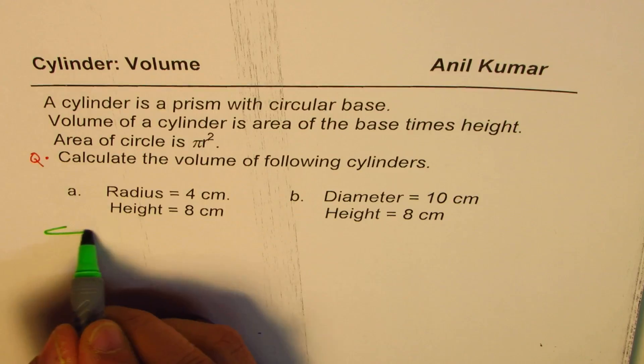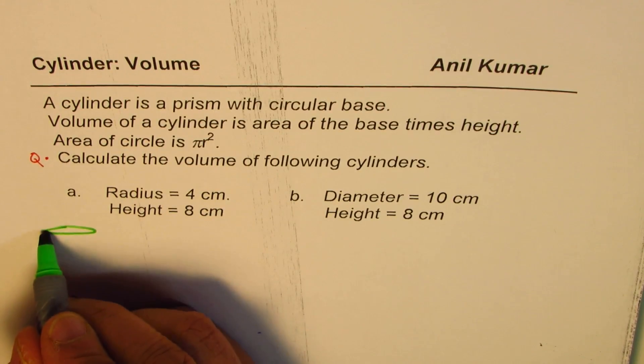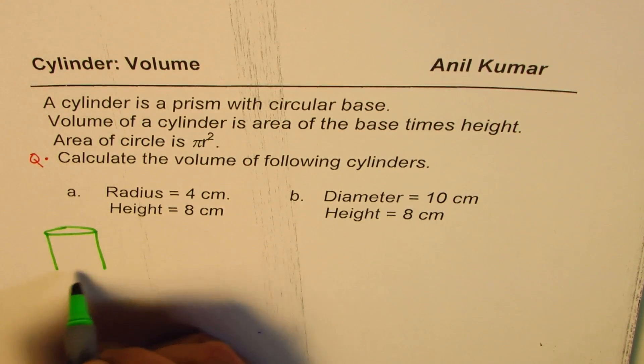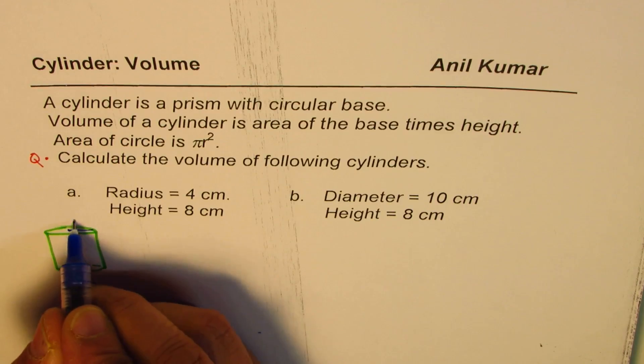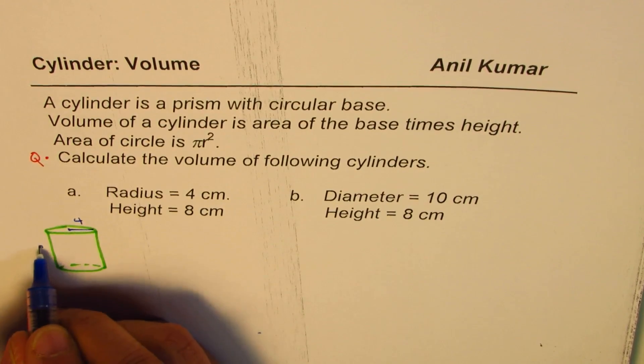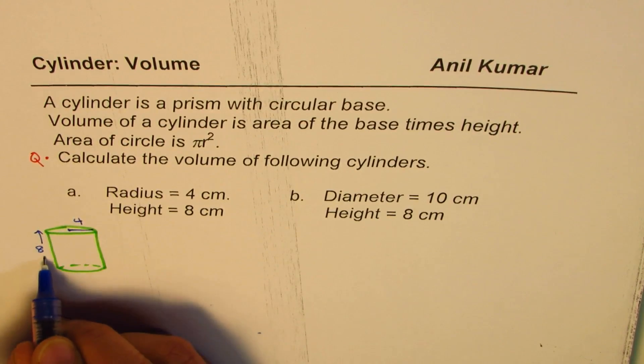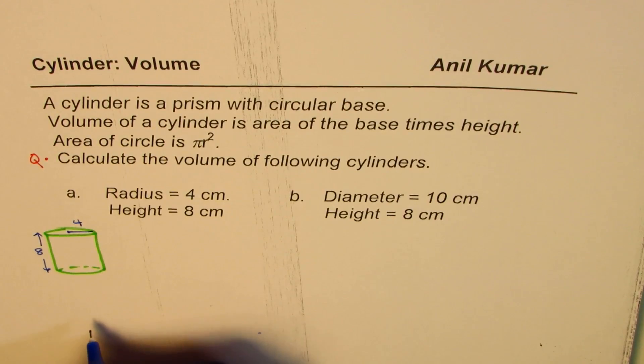So the first one here, we are given radius of 4 and height of 8. So that is kind of the cylinder. We are given radius 4 and height is 8. All units are in centimeter.